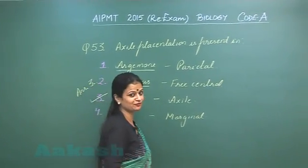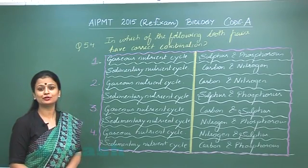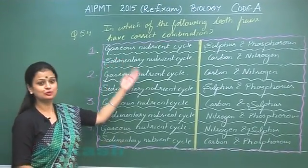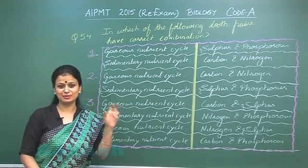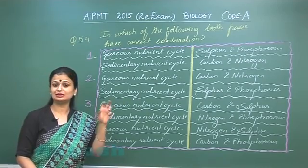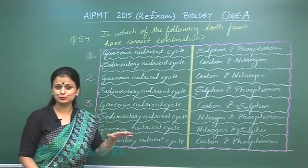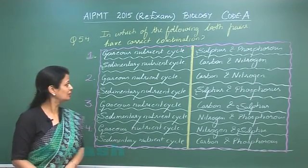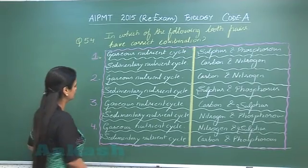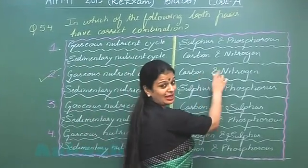Let's move on to question number 54. In this question we have to look for the correct combination with respect to nutrient cycles. In the gaseous nutrient cycle the biogenetic material is mainly gaseous, whereas in the sedimentary nutrient cycle the biogenetic material is non-gaseous. In the gaseous cycle the nutrient pool is the atmosphere or hydrosphere, while in the sedimentary cycle the nutrient pool is the lithosphere. The right option is option number 2 — in the gaseous nutrient cycle, examples are carbon and nitrogen.